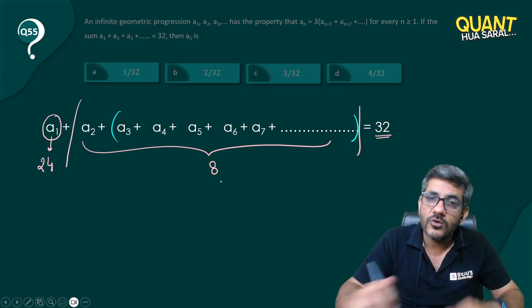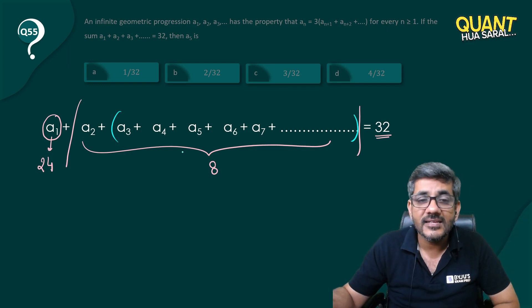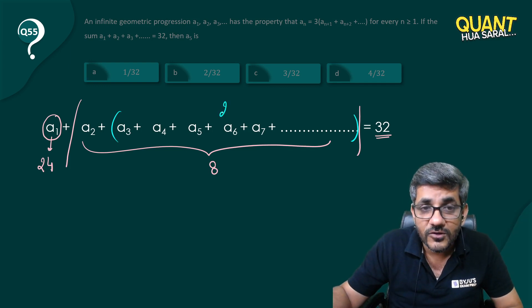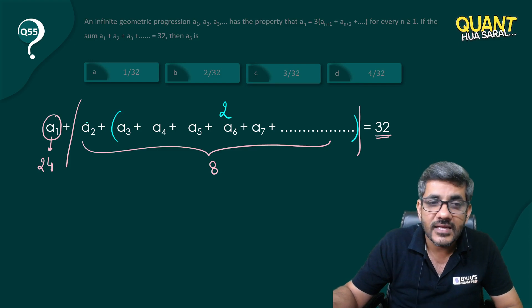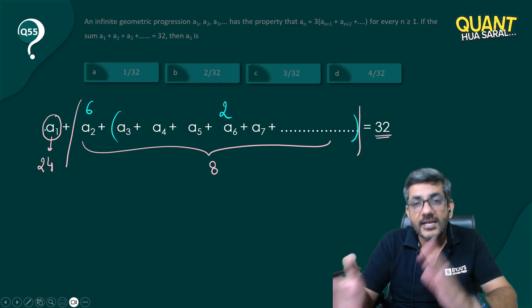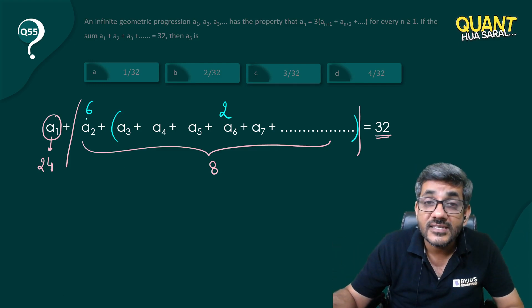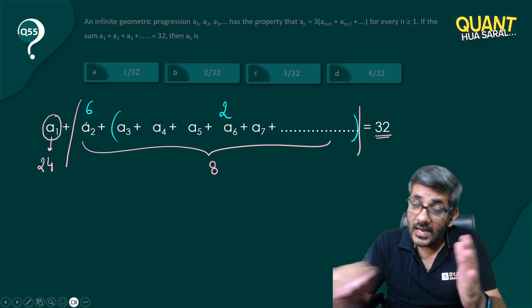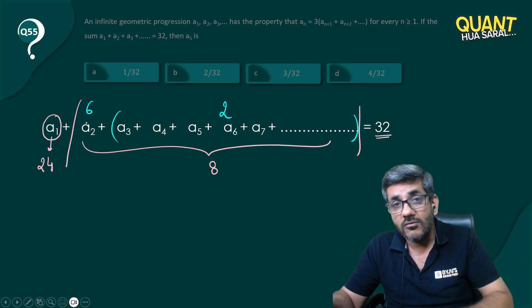So once again I can say one-fourth of 8—that is, if 2 is the sum of all these terms, then a_2 would be equal to 6. Is that correct guys? The way 24 was thrice of 8, similarly 6 is thrice of 2, and the same way it would go on.